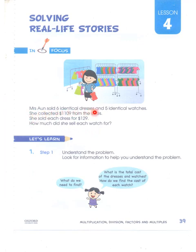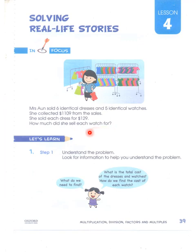Mrs. Iron sold six identical dresses and five identical watches. From the six dresses and five watches, she collected eleven hundred and nine dollars from the sales. She sold each dress for one hundred and twenty-nine dollars. How much did she sell each watch for? First of all, we'll list out what is given to us — what is known to us.